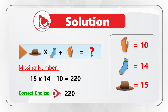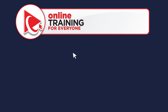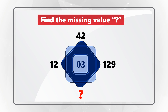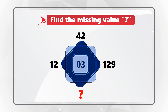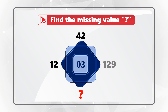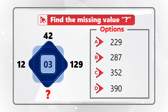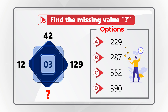Do you have a better way to solve it? Please post your observations in comments. Here's a practice question — I am not going to share the solution; instead, solve this challenge on your own. The shape contains the numbers 12, 42, and 129 around it, with the number 3 in the middle. The missing value has four choices: A=229, B=287, C=352, D=390. Post your answer in comments so I can give you feedback. Good luck.